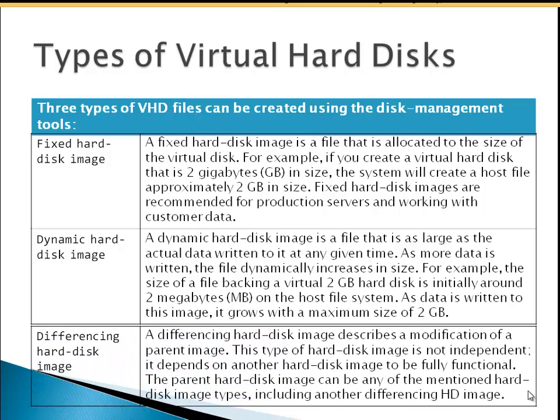The next type is the differencing hard disk. A differencing hard disk image describes a modification of a parent image. This type of hard disk image is not independent — it depends on another hard disk image to be fully functional. The parent hard disk image can be any of the previously mentioned hard disk image types, including another differencing hard disk image.